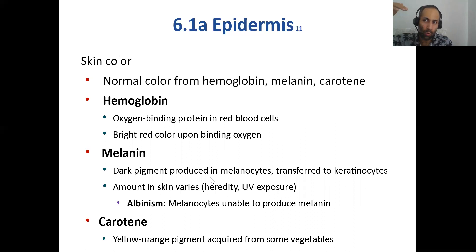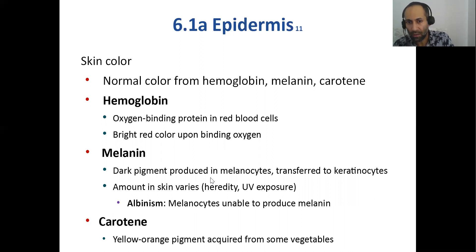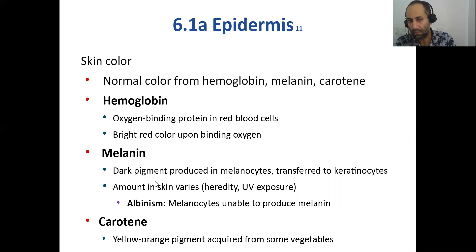Melanin and albinism: people who are albinos have a recessive trait. If your parents had a recessive gene on both sides and you inherit it, you become an albino — complete or partial albinism. In either case, you lack melanin in your skin and eyes. It's not only humans — all creatures show this variation.